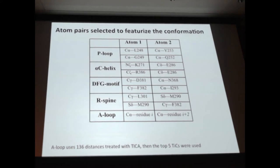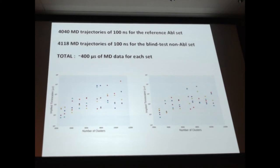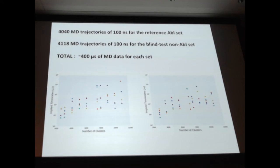We did the clustering for every model five times with different lag times. We had 400 microseconds of aggregate data. We did it twice, actually: once where we relied only on the Abl crystal structures, and another set where we relied on everything but Abl structures, as if there had never been a crystal structure available. The number one question I wanted to answer was: if you're working on a kinase you've never had a crystal structure of, how good is that? So we did a set where there's zero crystal structure available - we still pay attention to things we know are important, like the DFG flip - but there's literally no crystal structure available. So we have 400 microseconds for each set.